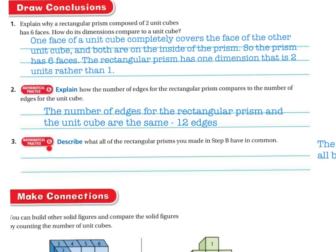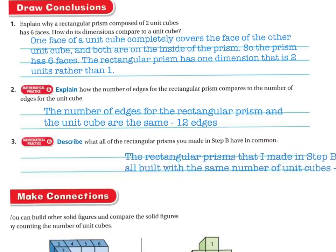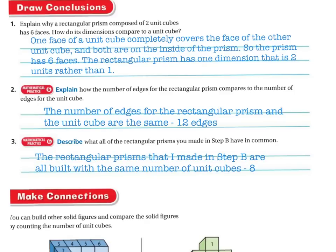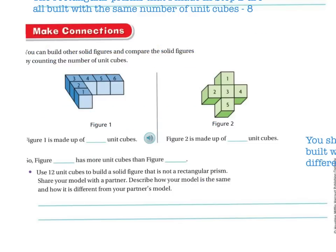Mathematical practice: describe what all of the rectangular prisms you made in step B have in common. The rectangular prisms made in step B are all built with the same number of unit cubes — eight. You can build other solid figures and compare solid figures by counting the number of cubes.